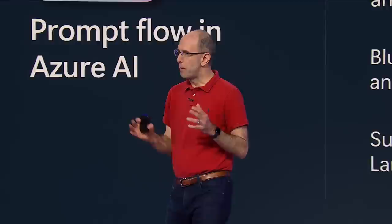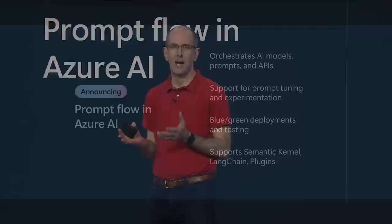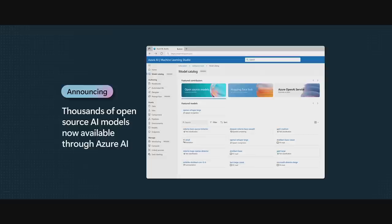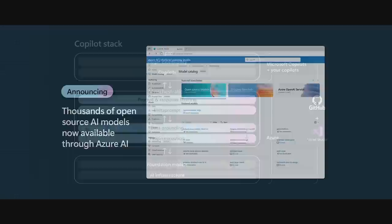Prompt Flow is an end-to-end system for building, testing, and deploying modern AI-driven applications. It works not just with our Azure OpenAI Service but also with thousands of open-source AI models. This week at Build we're also releasing a new Azure AI model catalog that makes it incredibly easy to use and consume every open-source model across your Azure AI solutions.